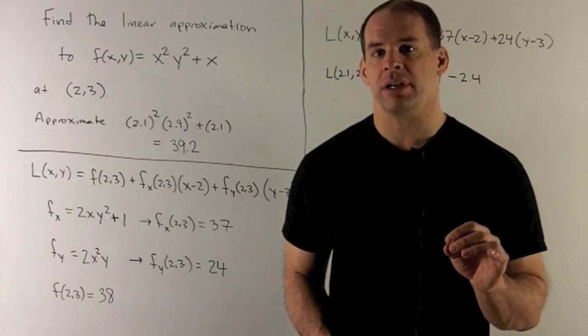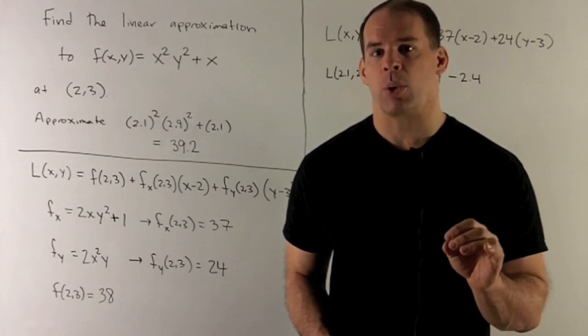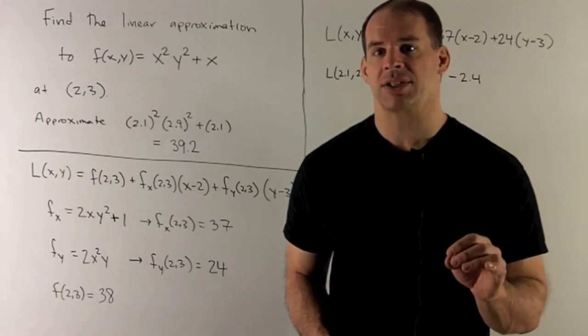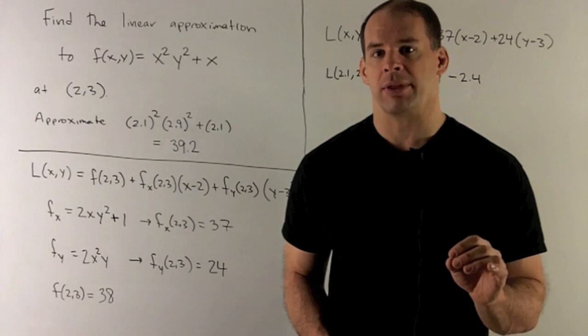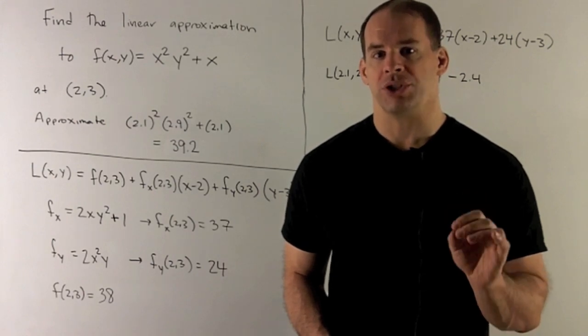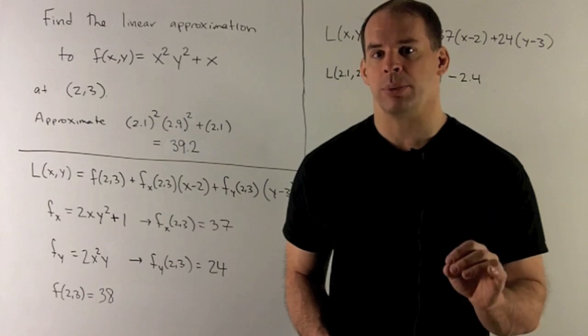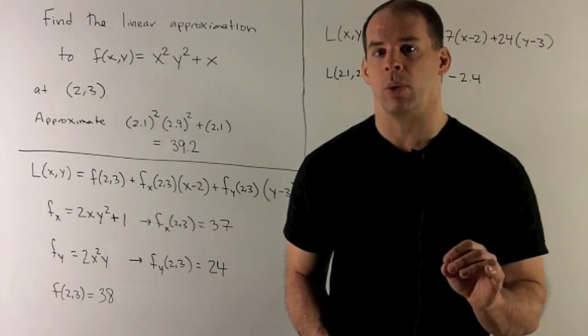Find the linear approximation to the function f(x,y) = x² × y² + x at the point (2, 3). Once you have that, approximate 2.1² × 2.9² + 2.1.